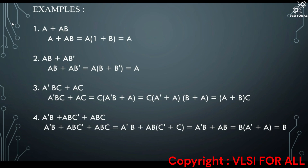By using the distributive law, we can write C(ĀB plus A) and our answer is (A plus B) · C. Next example: ĀB plus ABC̄ plus ABC — the first term is written as is, and for the next two terms we take AB as common, giving AB(C̄ plus C) = 1. So we get ĀB plus AB. Taking B as common gives B(Ā plus A) = B.